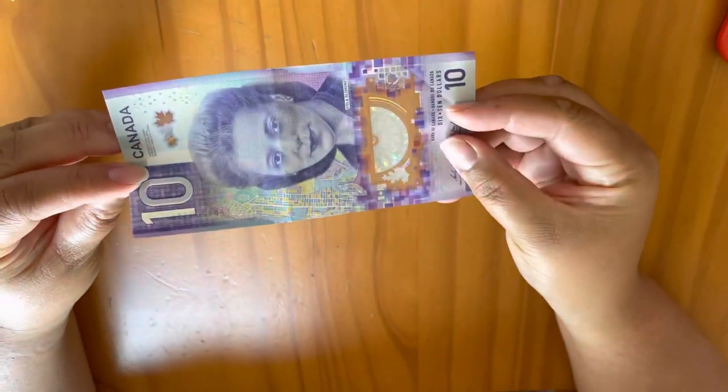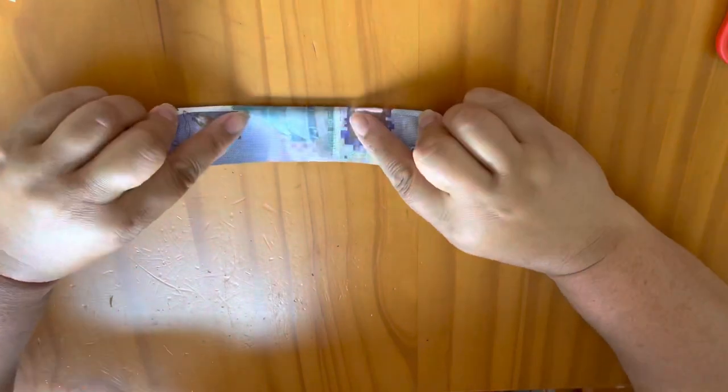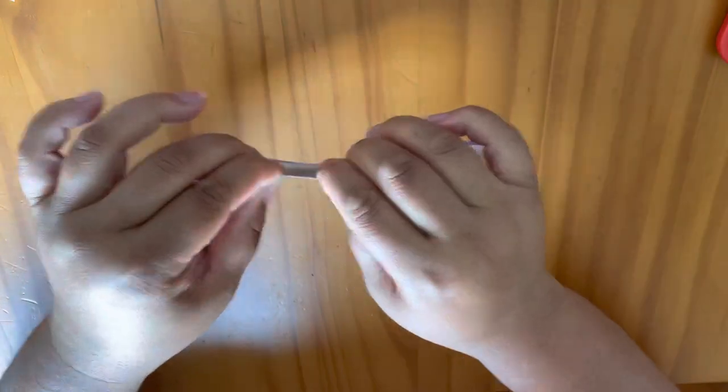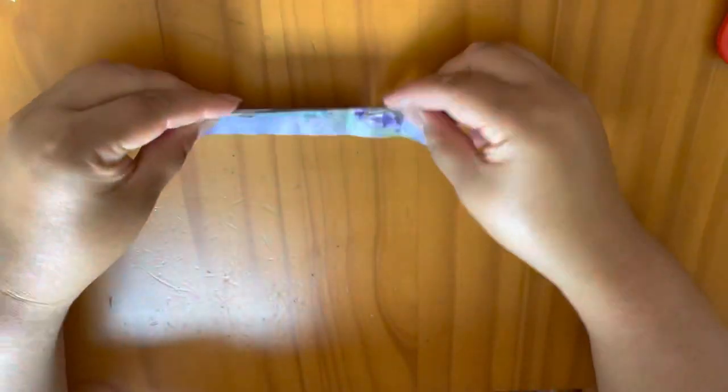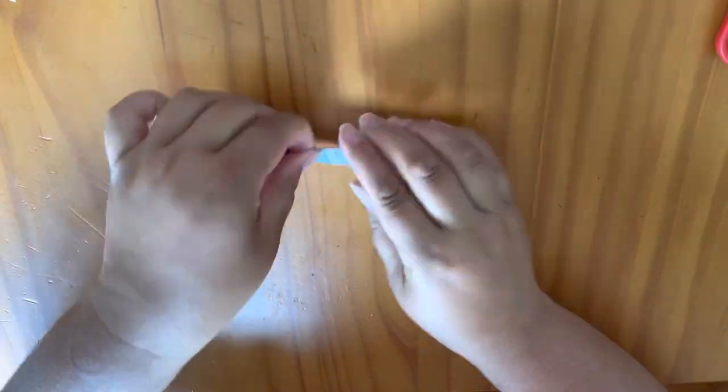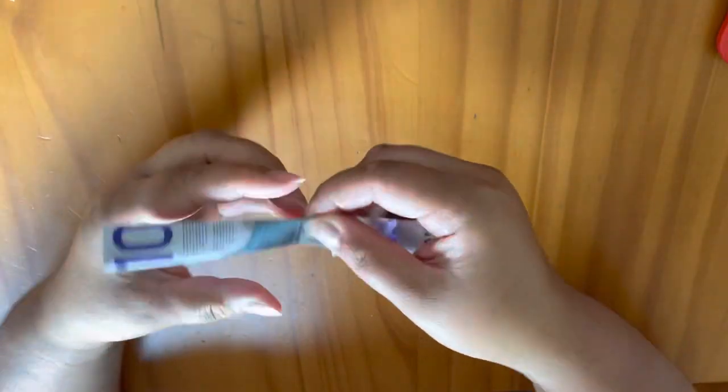Now we're moving on to our $10 bill. And we'll fold it in half lengthways again, making sure that crease is nice and tight. And we fold that in half again.